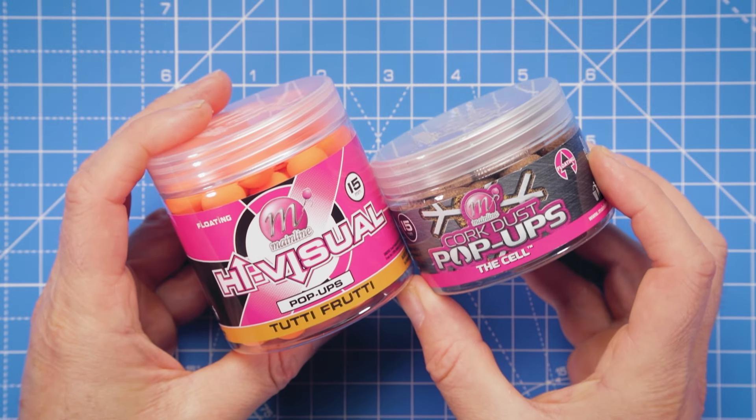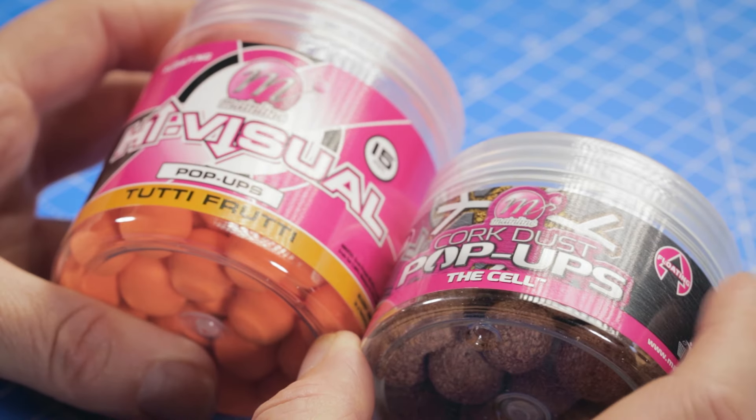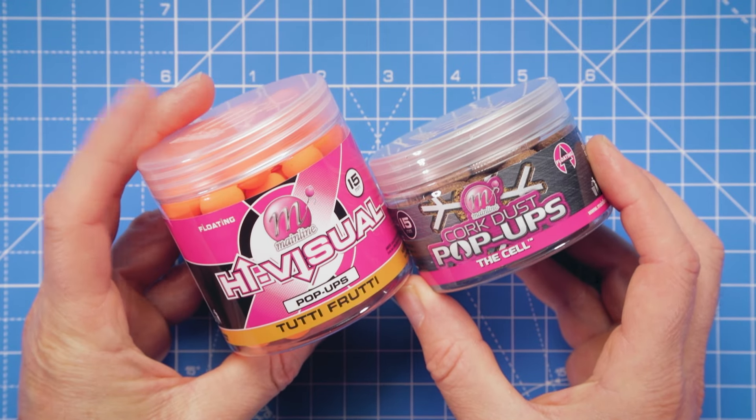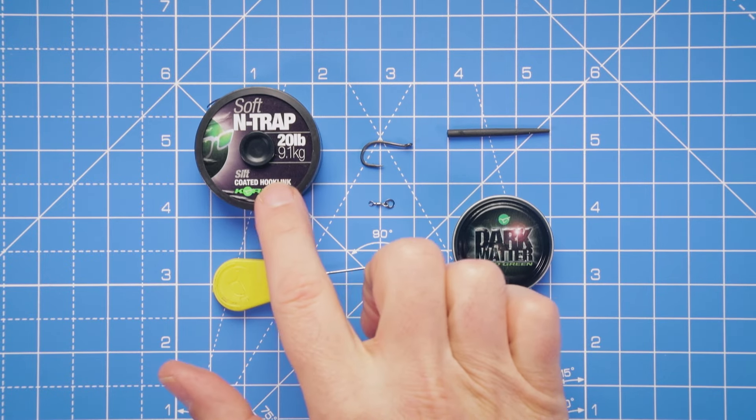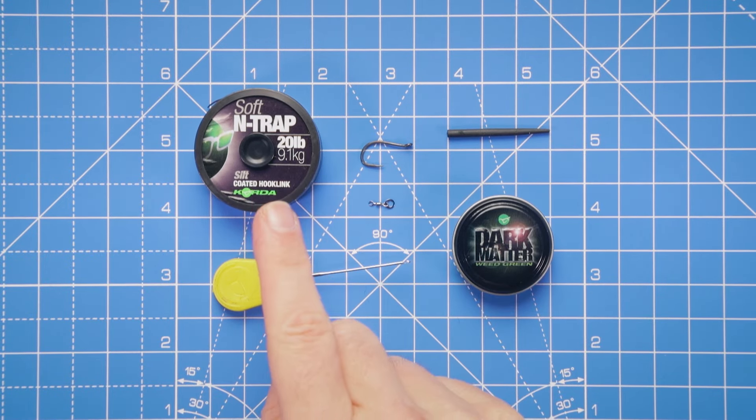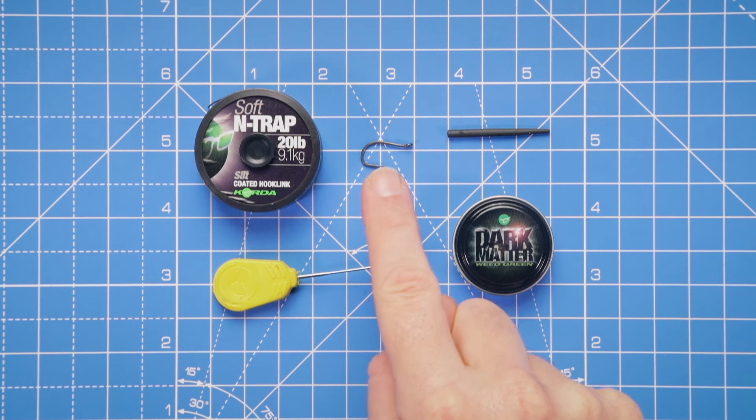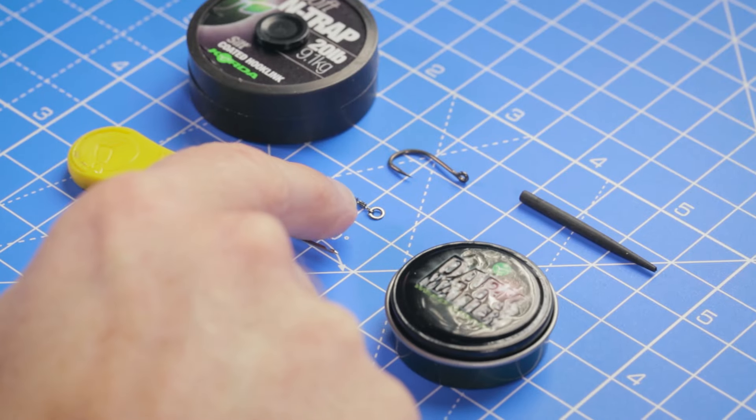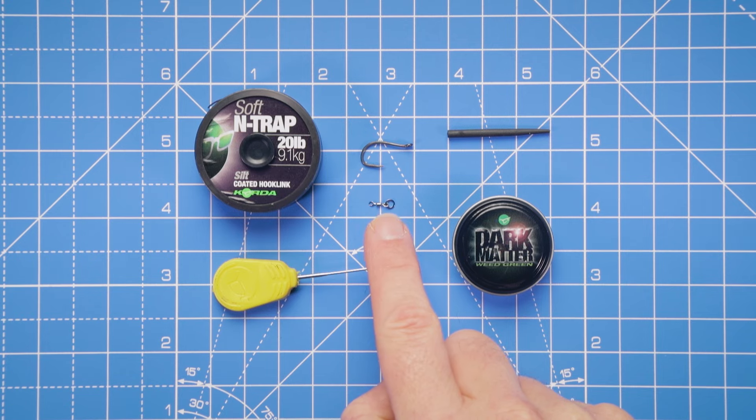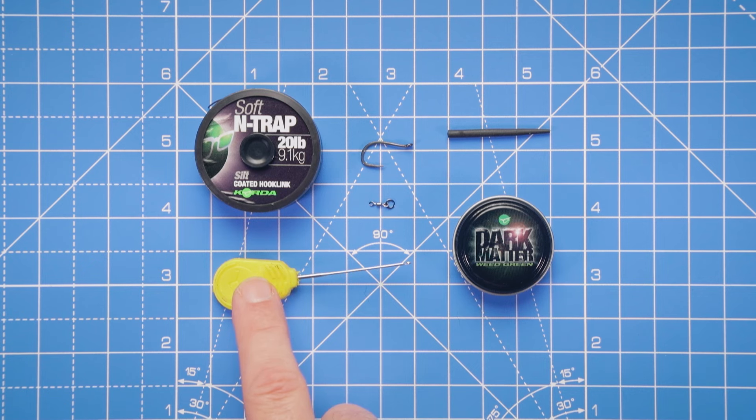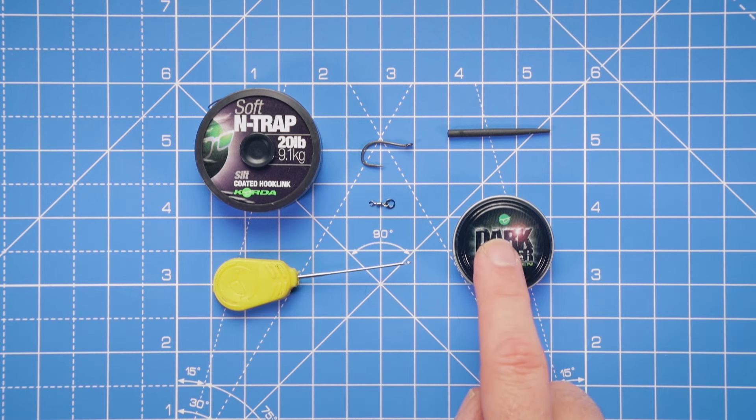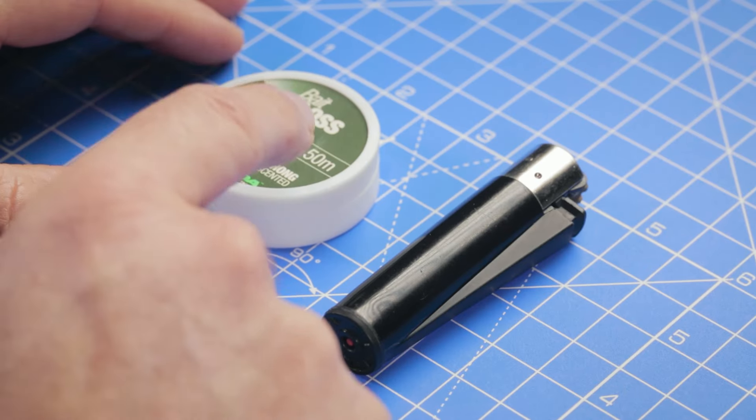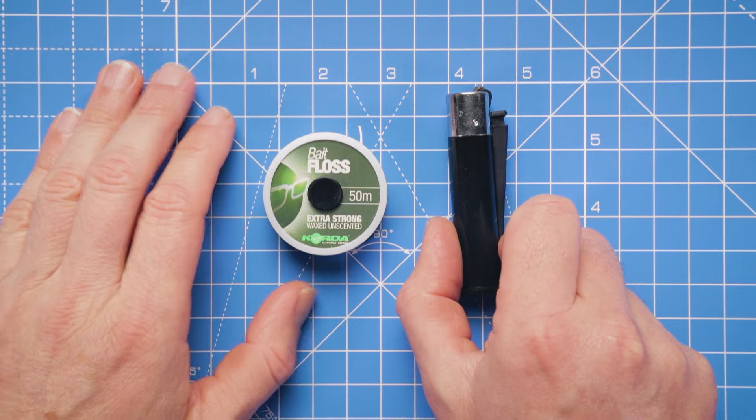The multi-rig is most commonly used as a pop-up rig, either with match-the-hatch style pop-ups like these Cell pop-ups or a high-vis pop-up like this. To tie this rig, we're going to use a coated braid like this. We've also got a size 6 Choddy hook, and then we've got an anti-tangle sleeve, a micro ring swivel for attaching our hook bait, a standard boilie baiting needle, and some putty to counterbalance that pop-up. We've got some bait floss for attaching our hook bait and then a lighter for blobbing off that bait floss.